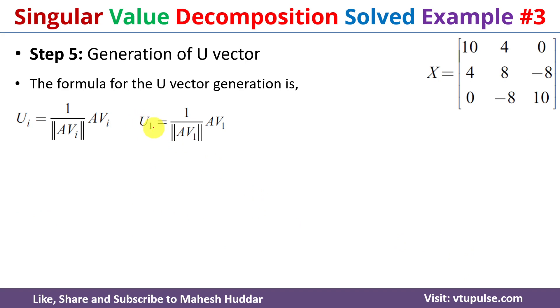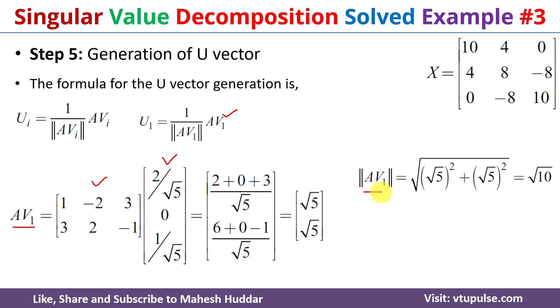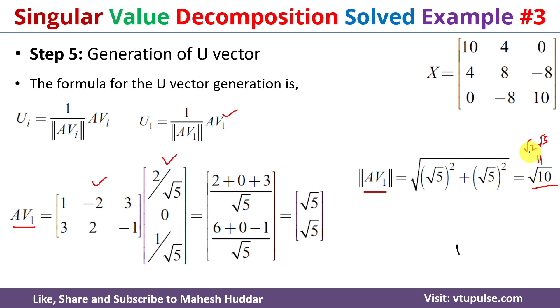Next we find u1 using the second eigenvector phi_1. Computing A times phi_1 gives [√5, √5]. The length of A times phi_1 equals √10, which equals √2 times √5. So u1 equals [√5/(√2·√5), √5/(√2·√5)] = [1/√2, 1/√2].